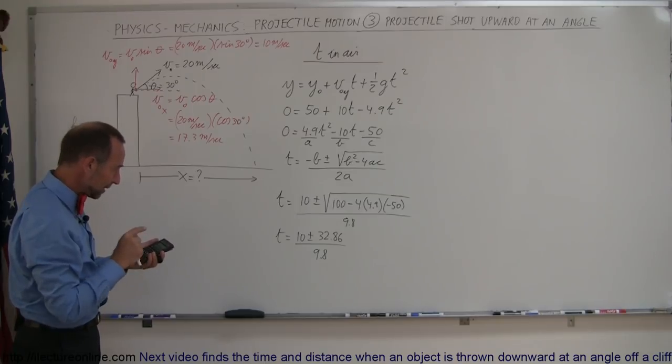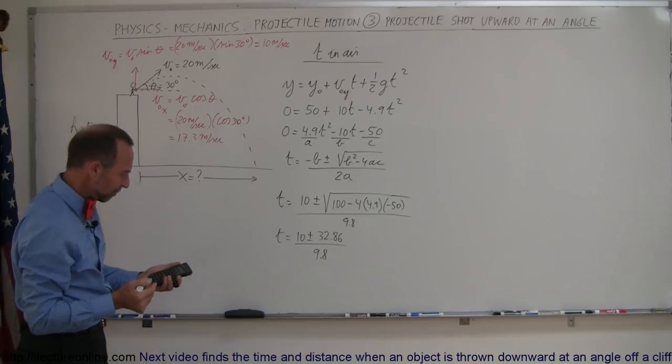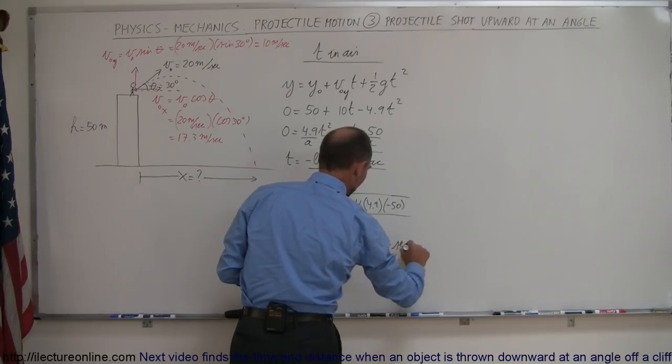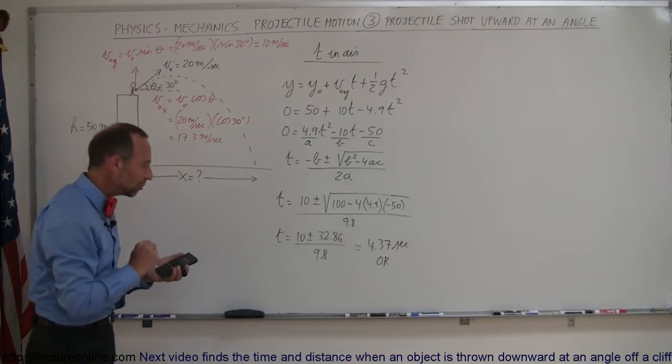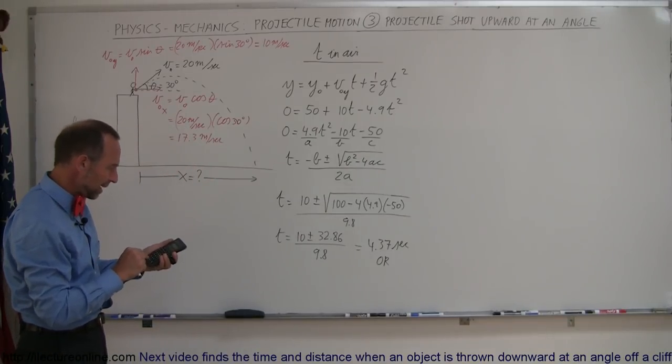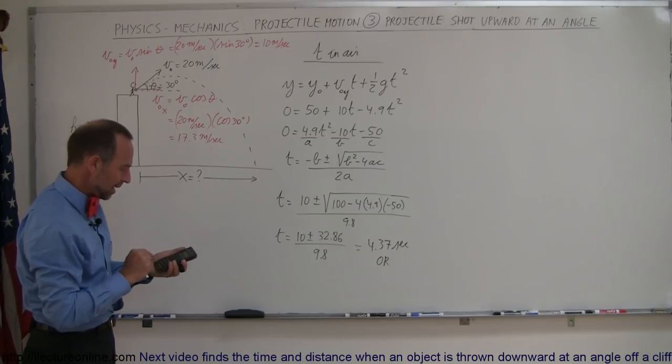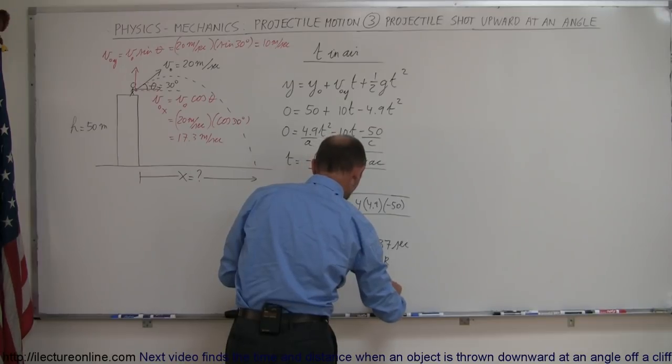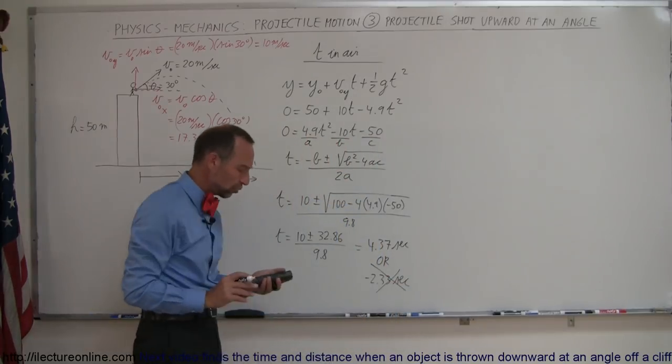But for now, let's go ahead and take the positive answer. So that's plus 10 and divide that by 9.8 and you get 4.37. So this is equal to 4.37 seconds. But just so we can keep track of that, let's assume the negative answer. So we have 10 minus 32.86 and divide that by 9.8, and so that would be 2.33 seconds. So minus 2.33 seconds. So that would be kind of the imaginary answer and we're not going to use that.